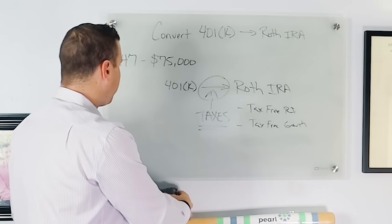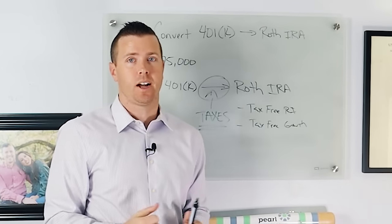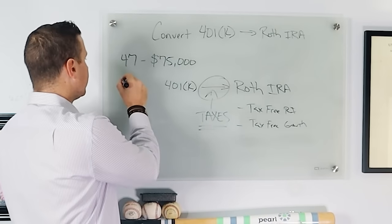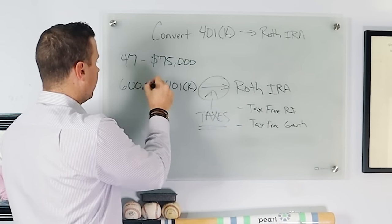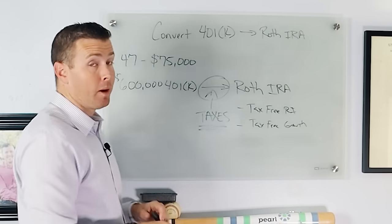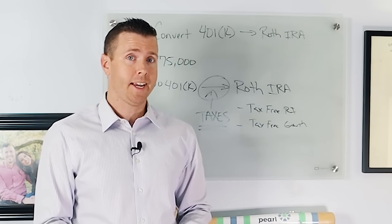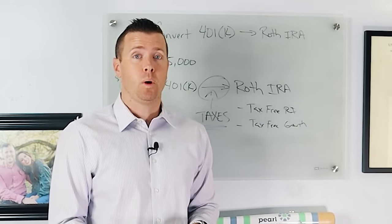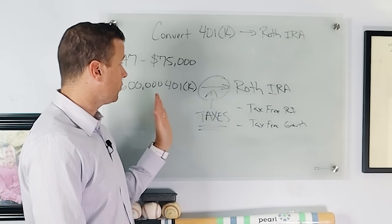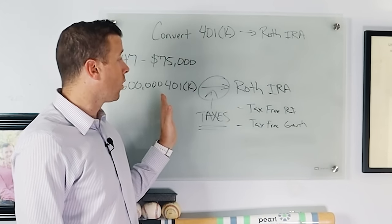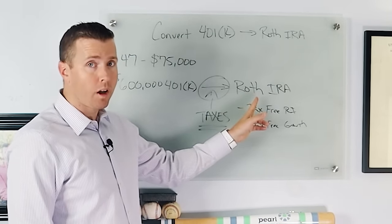And what if your old 401k is not $6,000? What if your old 401k is $600,000? You might be thinking, well great, that's awesome. I got a $600,000 old 401k. And what if you're asking the same question, Drew, should I roll over my $600,000 old 401k to a Roth IRA?